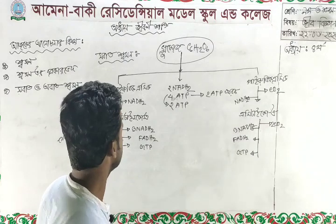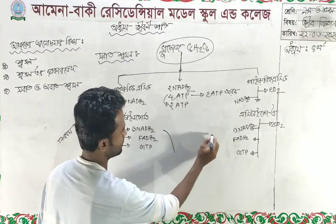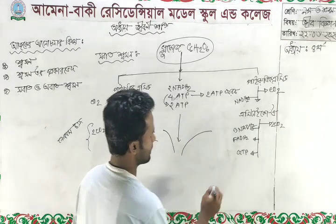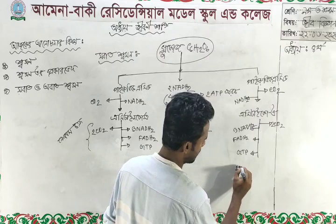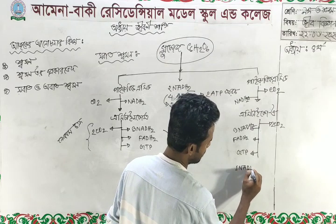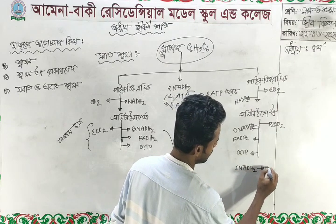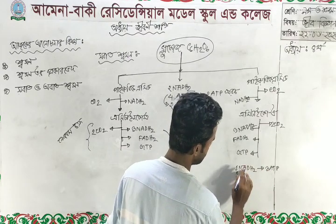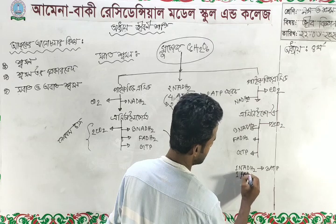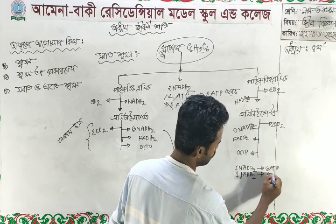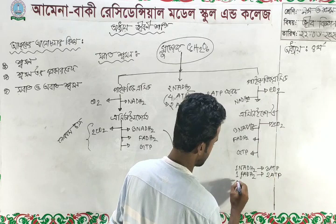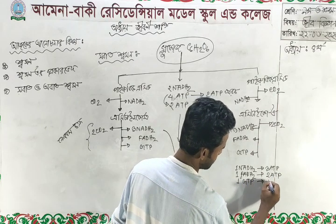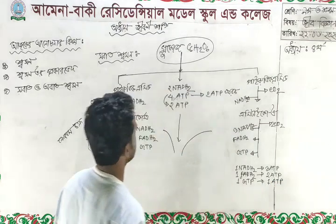We can see how much ATP is found. The total of NADH2 is NADH2. Each NADH2 makes 3 ATP. Each FADH2 makes 2 ATP. Each GTP makes 1 ATP.